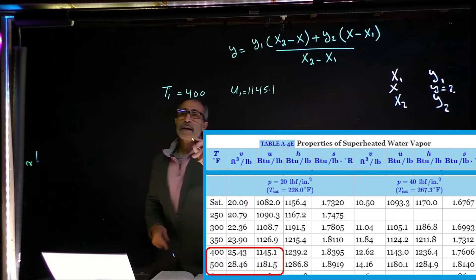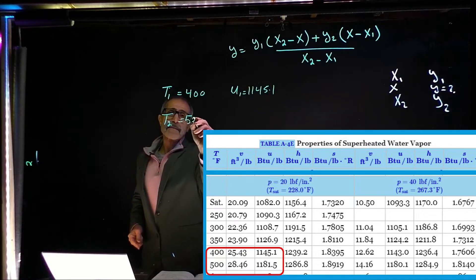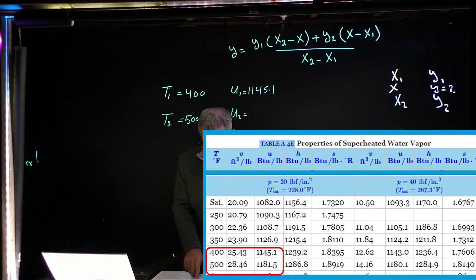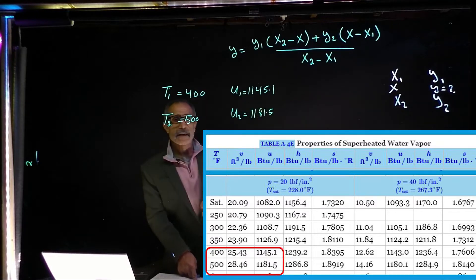And then I have temperature at T2, which is 500 degree. And that corresponds to u2, which is 1181.5, regardless of the unit.